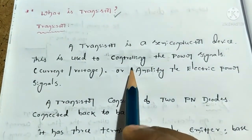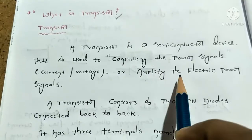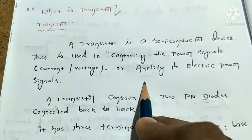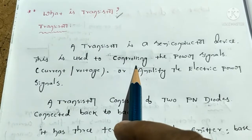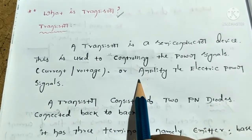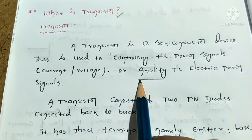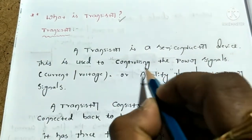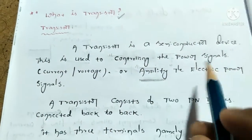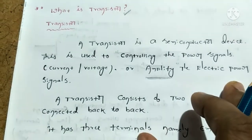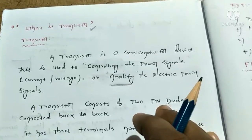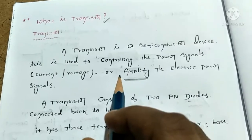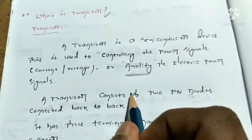Another term you can write: amplify the electric power signals. Amplify means controlling. This terminology is most important for electrical and electronics students. Amplify also means controlling. So, what do we say about a transistor? The transistor is an electric switch.